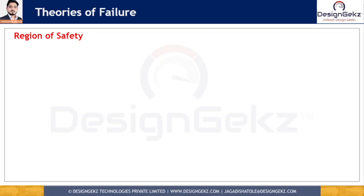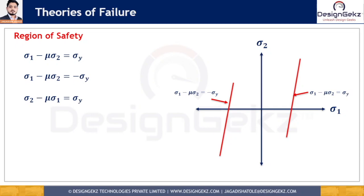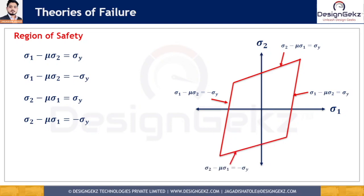For the region of safety, the boundary equations are: sigma 1 minus mu times sigma 2 equals sigma y; sigma 1 minus mu times sigma 2 equals minus sigma y; sigma 2 minus mu times sigma 1 equals sigma y; and sigma 2 minus mu times sigma 1 equals minus sigma y. These four equations define the region of safety on the graph. If a point lies within this region, the component is considered safe. If the point lies outside this region, the component will fail.